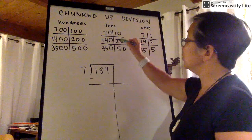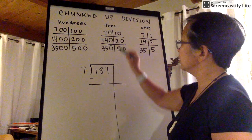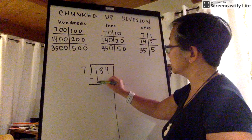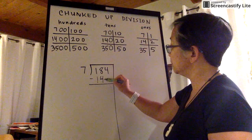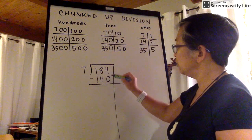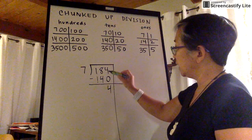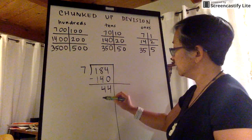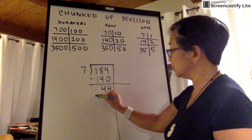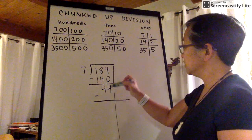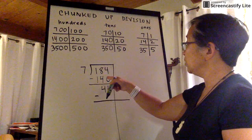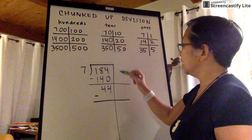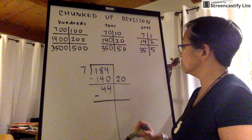We're going to choose a number on the left that's the closest to 184 that I can subtract from it. And that number would be 140 — the next one would be too big, so 140 is just right. It's the closest to it. 4 minus 0, then 8 minus 4, 1 minus 1 is 0. And if I choose 140 on the right, I need to write that number down too.